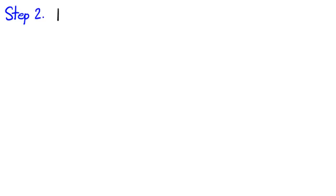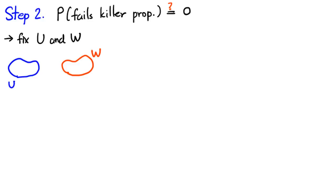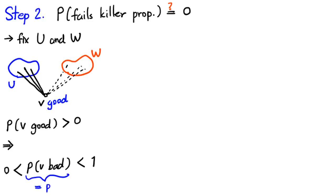Step 2 is rather intuitively obvious. We'll show that the probability that the killer property fails to hold is 0. So, fix two finite disjoint subsets U and W. We wish to find the probability that U and W fail to satisfy the killer property. To do that, fix vertex v outside of U and W. We'll call v good if it is joined to all of U, but none of W. Then, the probability that v is good is some positive rational number. Hence, the probability that v is bad is also some positive rational number, lying strictly between 0 and 1. Let's call this number p.